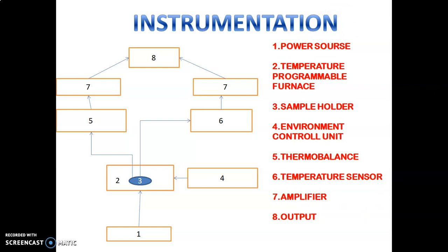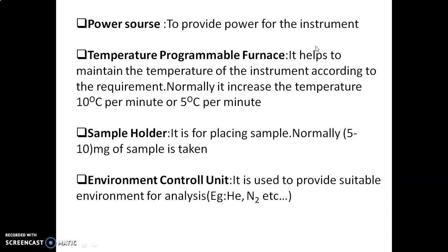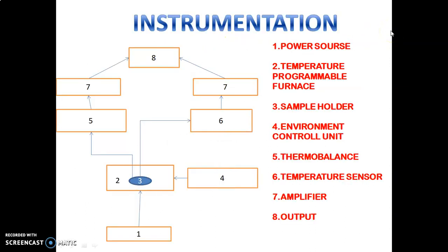The first part is the power source. From the name it is clear — source means it provides something. So the power source is the part which gives power for the instrument. The second component is the temperature programmable furnace, which is the space or place at which we are heating — that is, providing temperature.